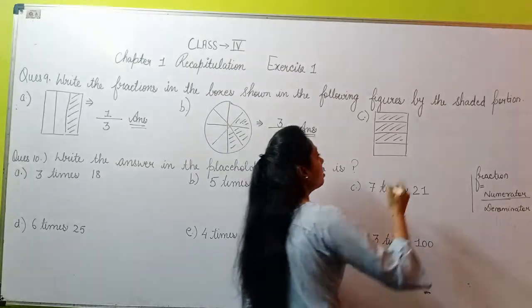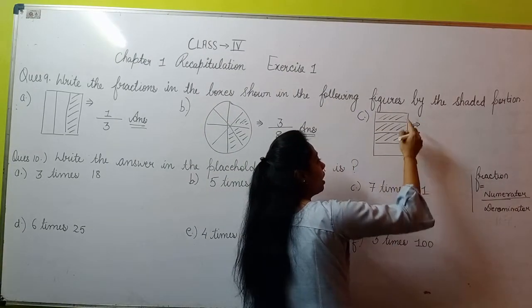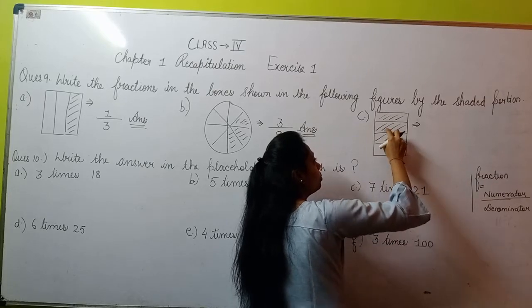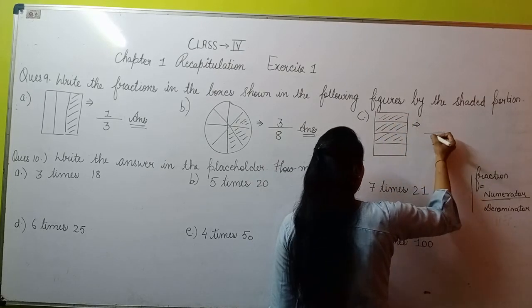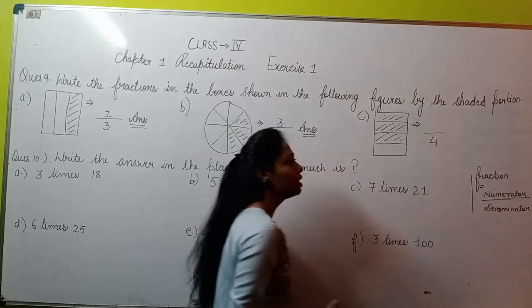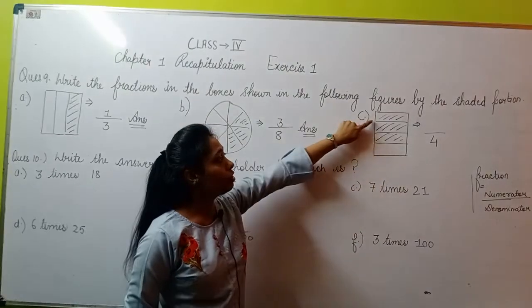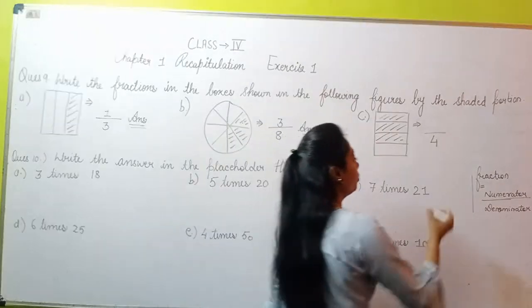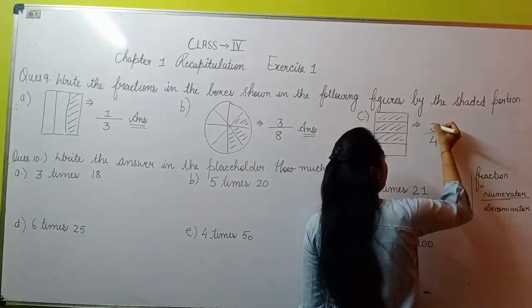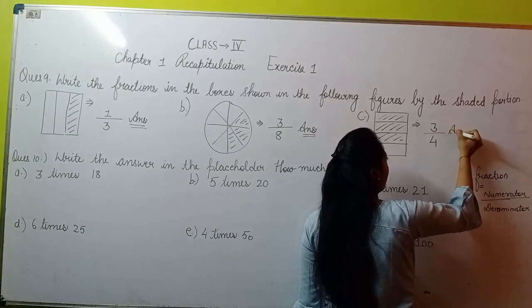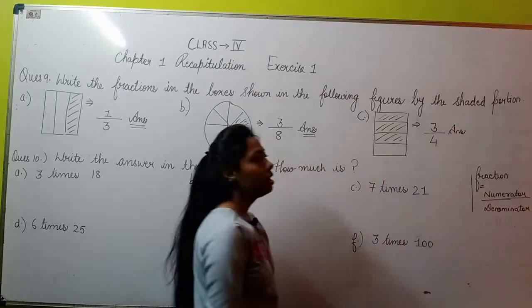Similarly, part C. In part C you'll see it is a square kind of figure with one, two, three, four parts. So the figure is divided into four parts. Out of these, how many are shaded? One, two, and three. Three parts are shaded. So three parts will go on top. So 3/4 will be your answer.